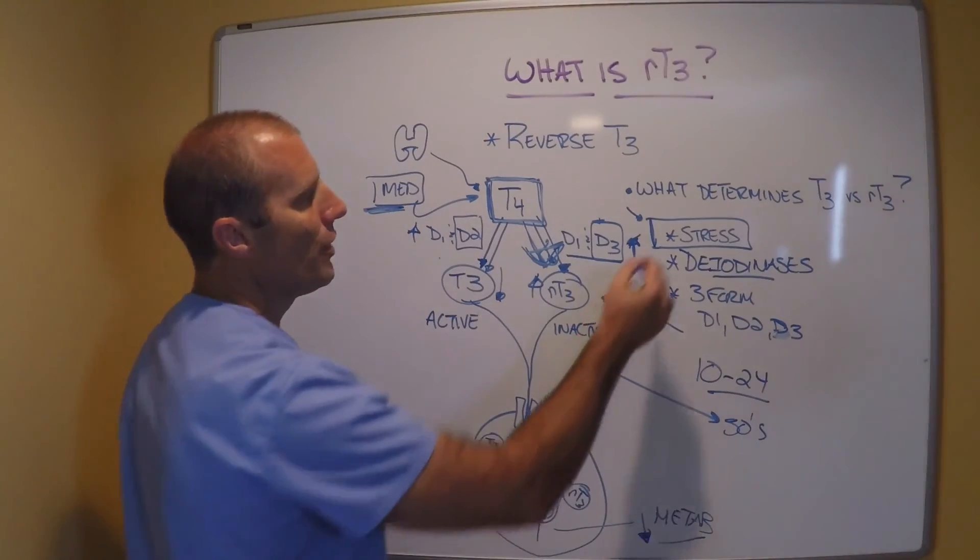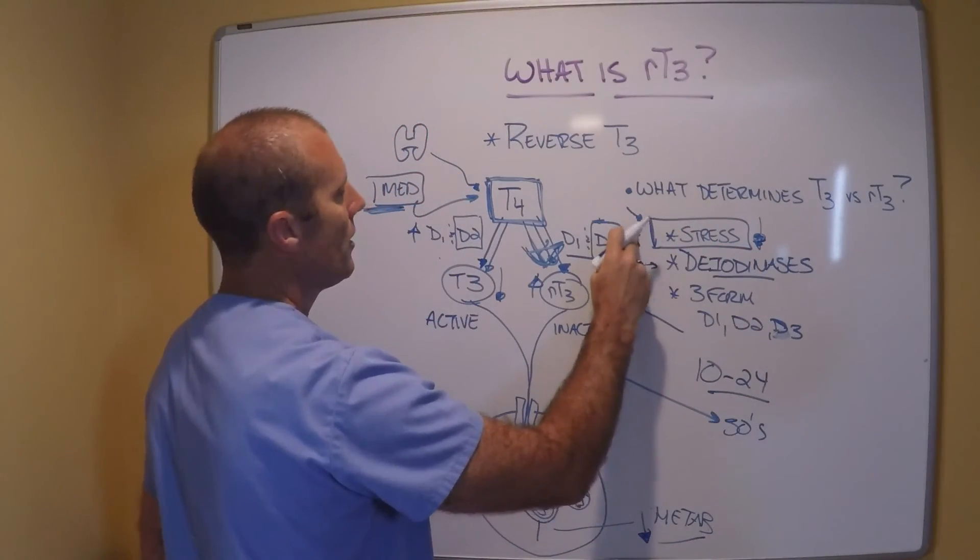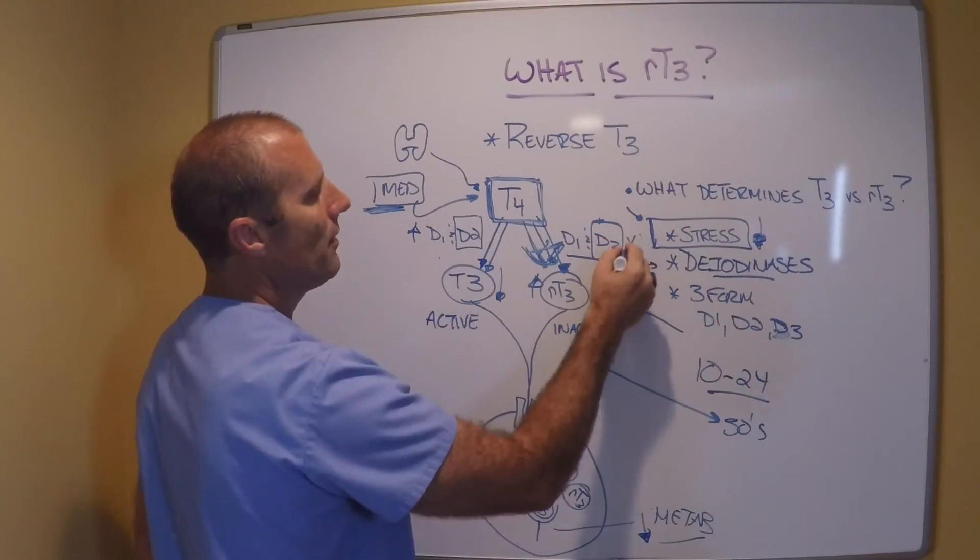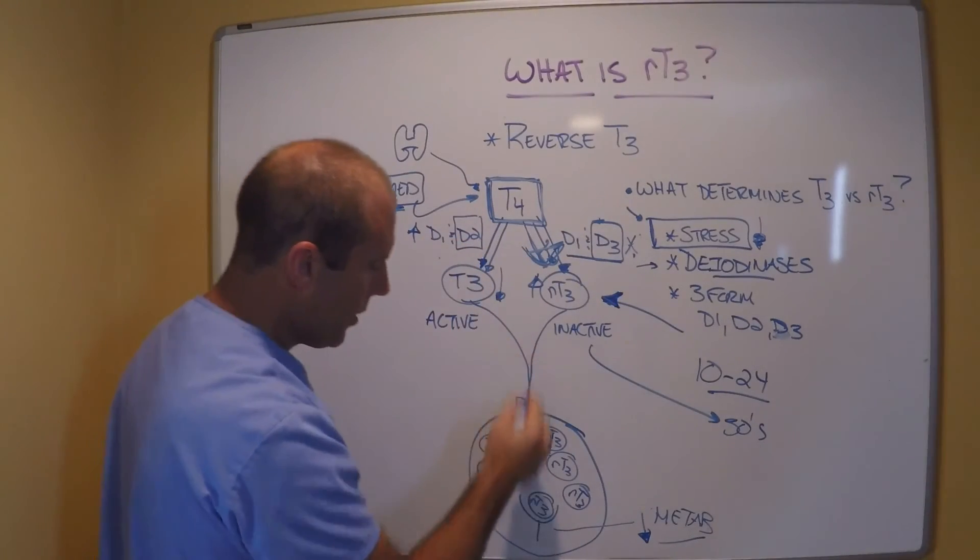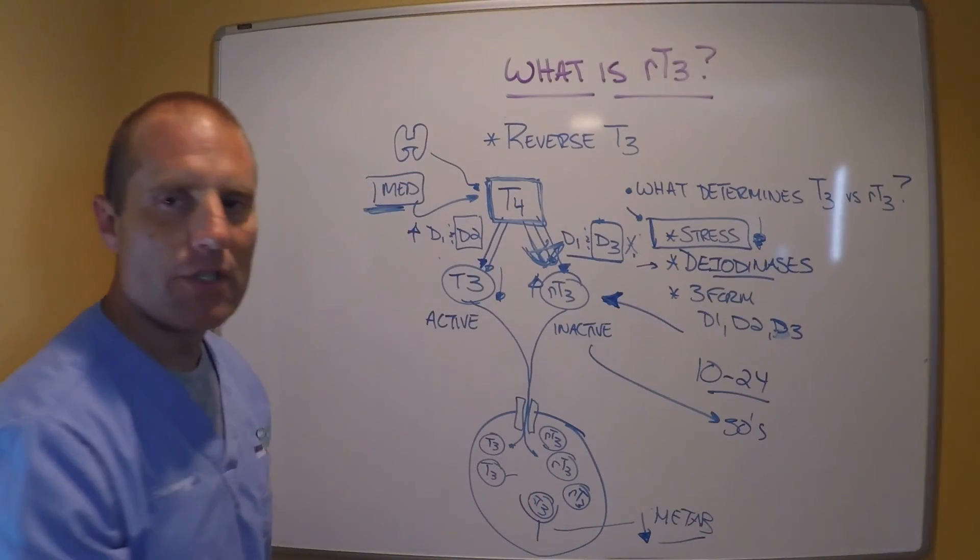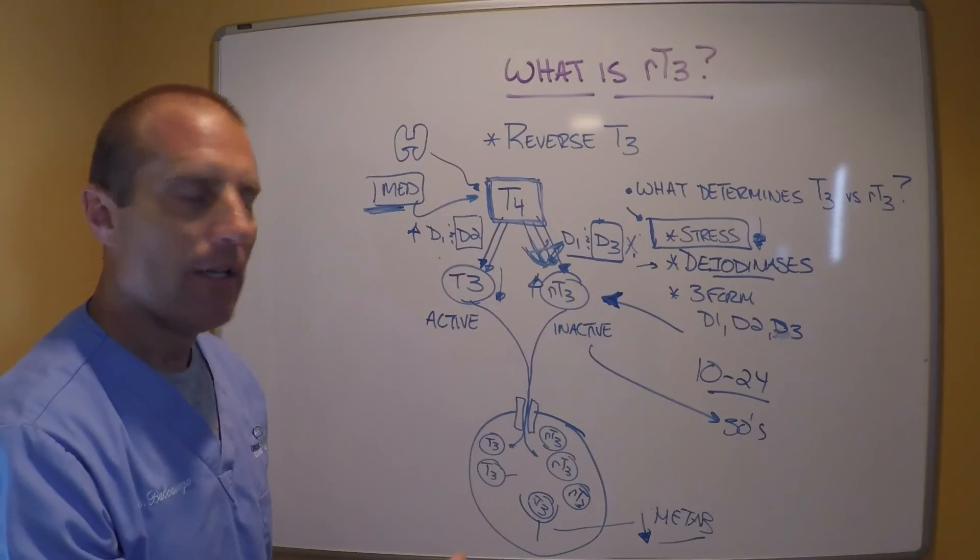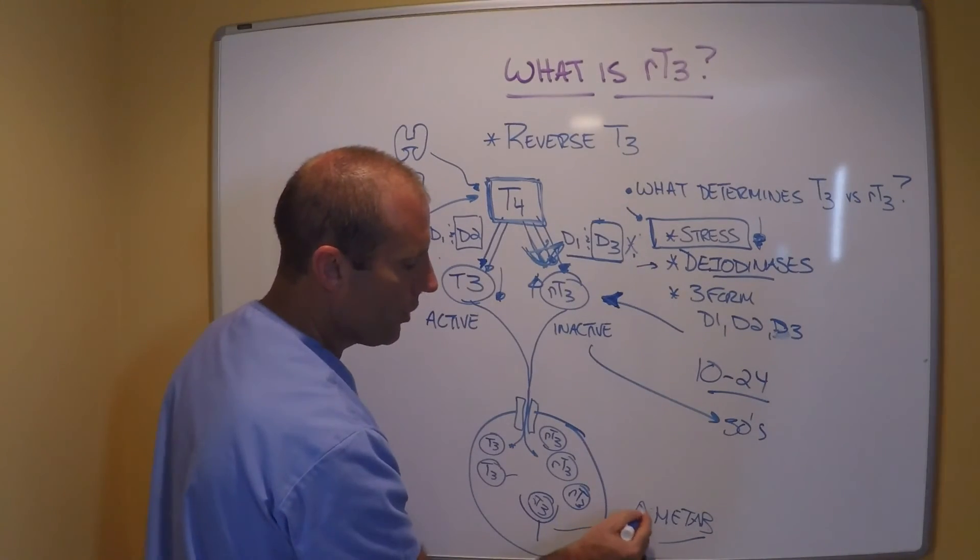Once we started decreasing the stressors in her body and her stress reduced, now instead of making more reverse T3, we're making more D2, more thyroid hormone. We start to see an increased T3 stimulation of those thyroid receptors within the peripheral cells, and her metabolism actually started to go up.